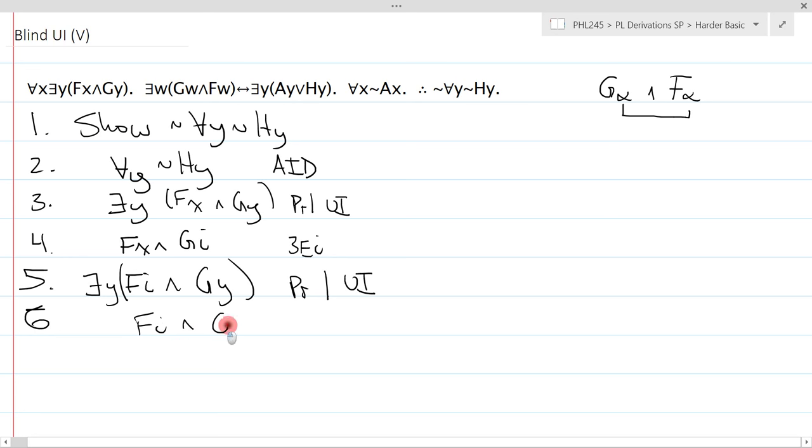And whenever I EI, I must EI to a brand new variable, five EI. Now, the point of all this is in the end, I want matching F and G, and I got it. How did I get it? Because I UI'd premise one again to match the G I wanted. So all I need to do is rip these out. Well, I get GI from line four simplify, and I get FI from line six simplify. No problem.